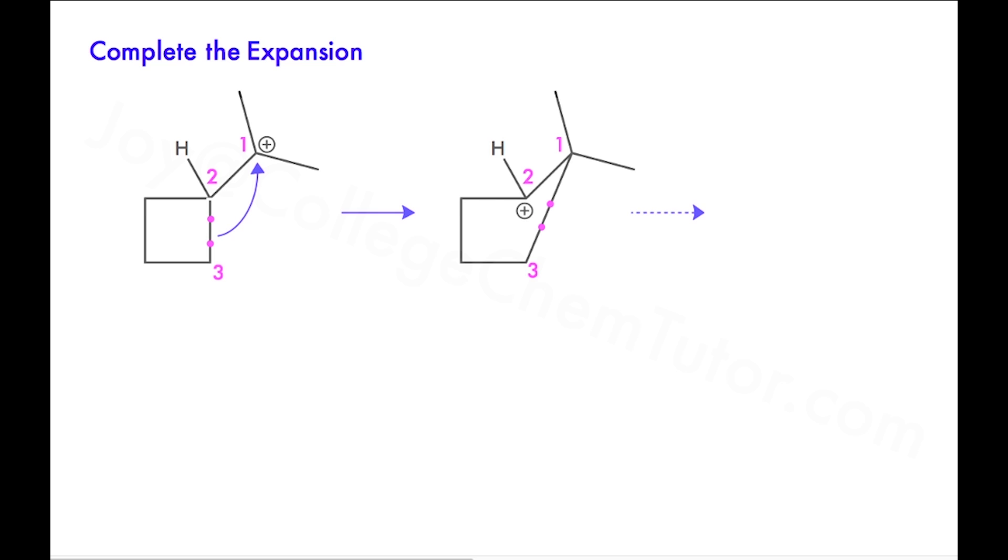The new structure looks awkward, so we convert it into a proper five-membered ring as shown by the dotted arrow. The dotted arrow does not represent a step in the mechanism. Instead, we simply redrew the structure, and we use the pink numbers to help us track the molecule during the expansion.